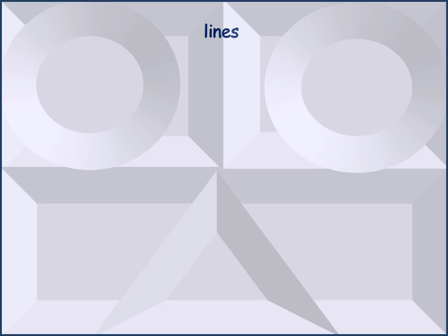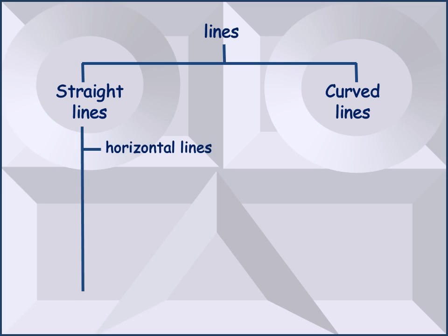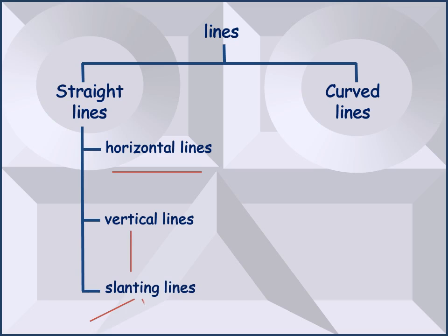You have already learnt about lines. Lines are broadly divided into straight lines and curved lines. Straight lines can be horizontal, which are sleeping lines, vertical, which are standing lines, and slanting lines, which can slant to the left or to the right. Lines that are not straight are called curved lines.